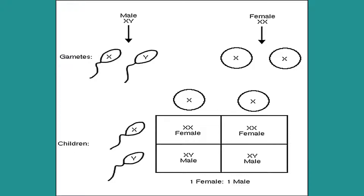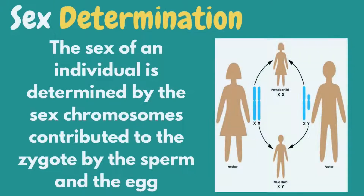Chromosomal sex is determined at the time of fertilization. A chromosome from the sperm cell, either X or Y, fuses with the X chromosome in the egg cell. The sex of an individual is determined by the sex chromosomes contributed to the zygote by the sperm and the egg. If the X chromosome of the sperm fuses with the X chromosome of the egg cell, the offspring will be female. If the Y chromosome of the sperm fuses with the X chromosome of the egg cell, the offspring will be male. That's why the sex chromosome for female is XX while XY for male.